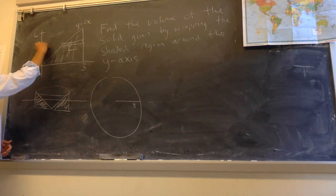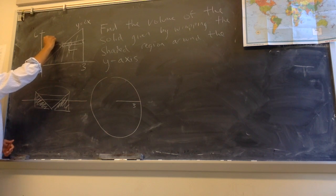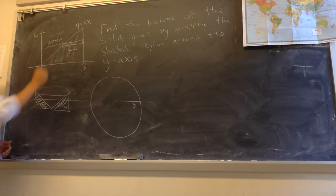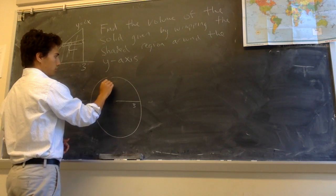And this piece wrapped around the y-axis gives you a smaller circle, a circle of radius whatever this distance is, whatever this x-coordinate is. So you get some smaller circle like this.